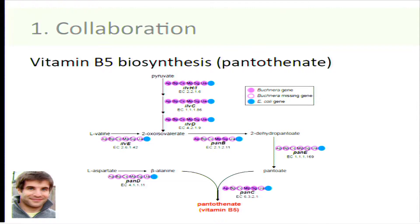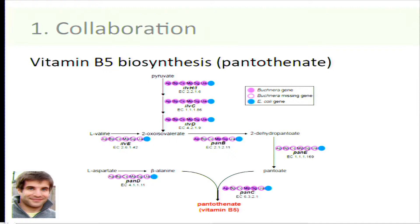This is work done by Dan Price, a postdoc in my lab. We have the pathway for pantothenate biosynthesis, or vitamin B5 biosynthesis. The blue dots represent basically the E. coli pathway — this is how E. coli makes vitamin B5. The purple dots represent the genomes of Bucknera from six different aphid species. The open circles indicate the gene is missing in those Bucknera genomes.